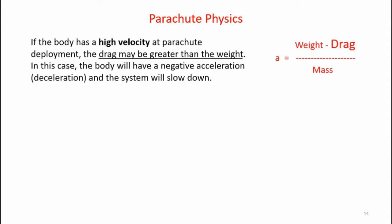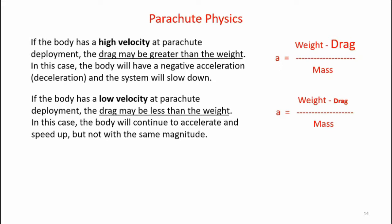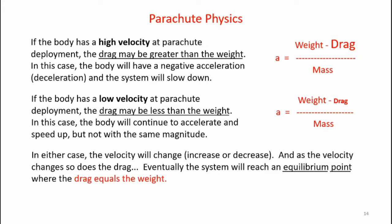If the body has a high velocity at parachute deployment, the drag may be greater than the weight. In that case, the body will have a negative acceleration or deceleration and the system will slow down. However, if the body has a low velocity at parachute deployment, the drag may be less than the weight, and the body will continue to accelerate — but not at the same magnitude. In either case, the velocity will change. As the velocity changes, so does the drag. Eventually the system will reach an equilibrium point where the drag equals the weight.